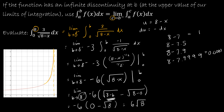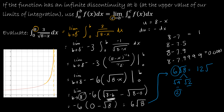We can't leave our solution as 6 radical 8. If we break 8 down into radical 4 times radical 2, the radical 4 becomes a 2 on the outside, so that's 12 with radical 2 left over. So the solution is 12 radical 2.